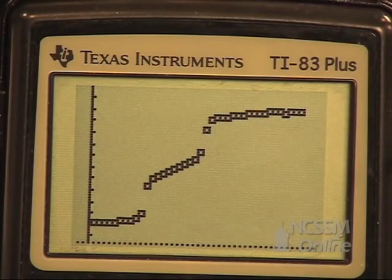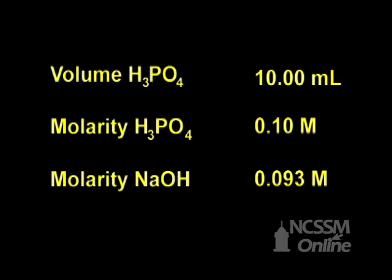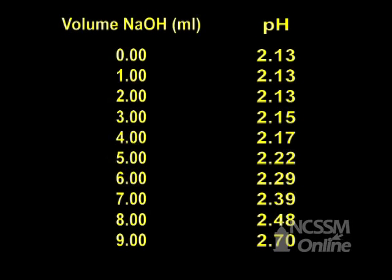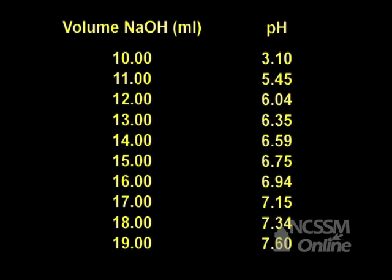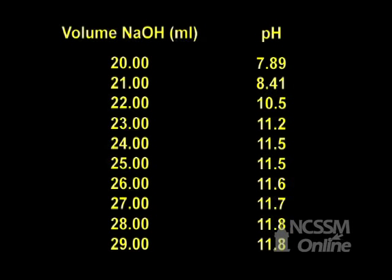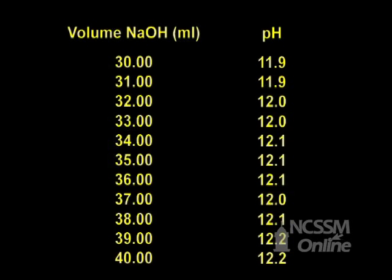This is the titration curve of the phosphoric acid with sodium hydroxide. This is the titration curve showing the first half equivalence point.